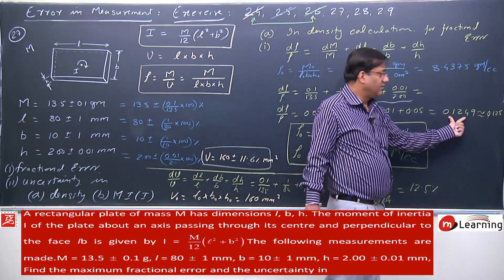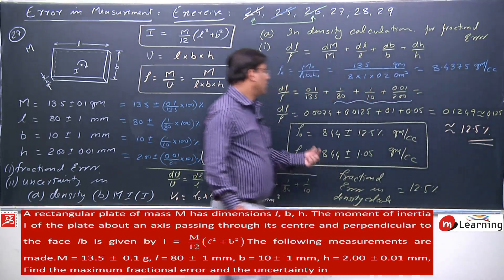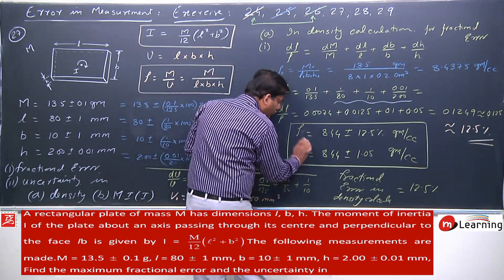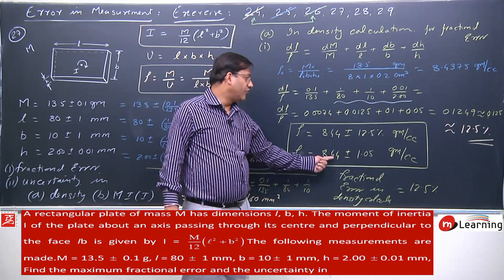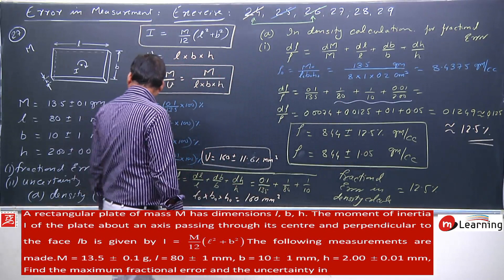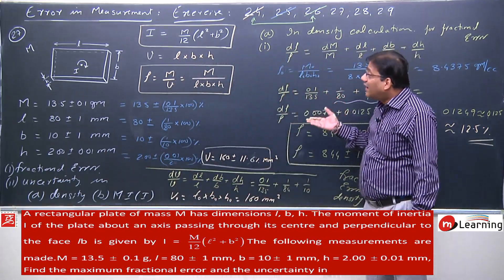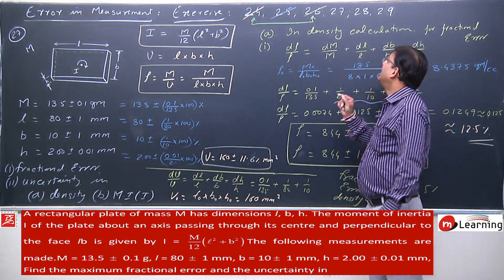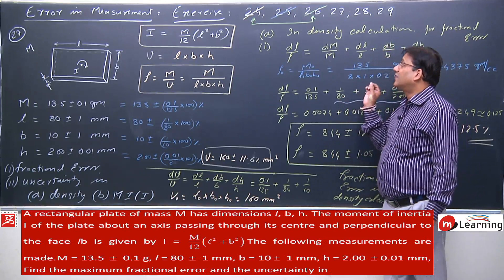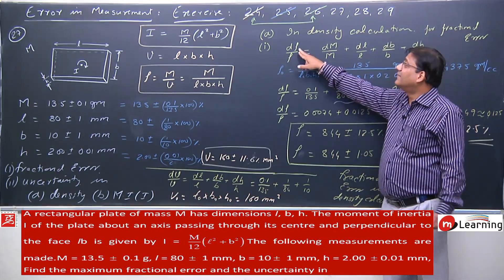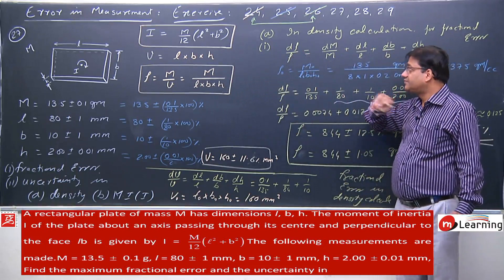This is the relative error. Converting to percentage gives the fractional error in density calculation. Now for uncertainty: dρ/ρ whole square — in this type of expression involving multiplication and division, note this carefully.